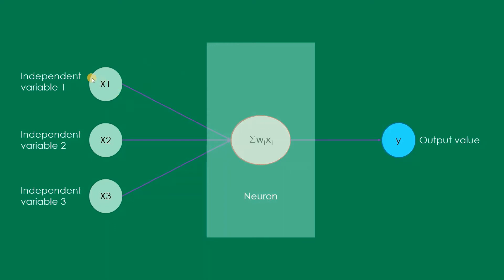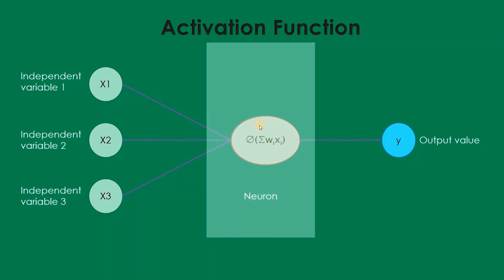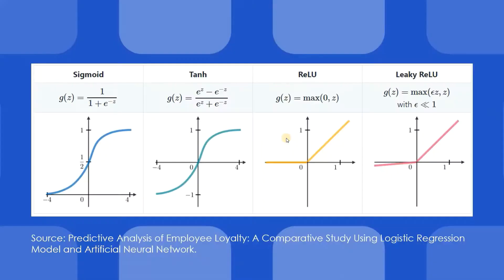So x1, x2, and x3 go in with weights w1, w2, and w3 — they are multiplied and added together: w1·x1 + w2·x2 + w3·x3. This sum is then provided as the input to the activation function, represented by phi. Whatever the activation function is, according to that function we will get the output.